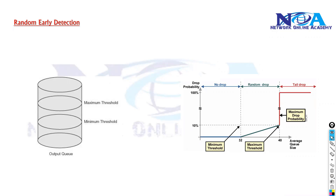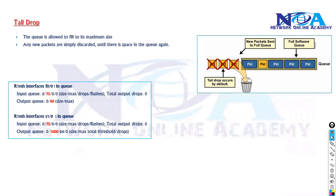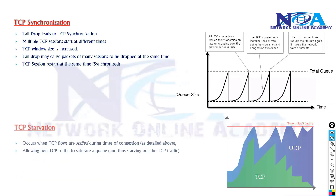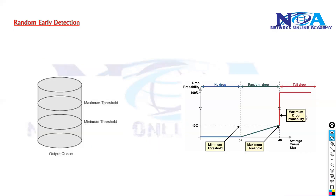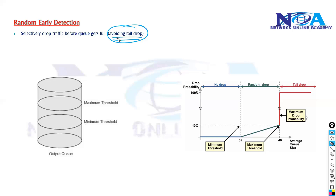Let's understand something called Random Early Detection (RED). In the previous discussion we covered the tail drop issue, where once the queue becomes full it automatically starts dropping the last packets irrespective of priority or marking values. To overcome this tail drop issue, we can configure Random Early Detection, which will selectively drop traffic before the queue becomes full.